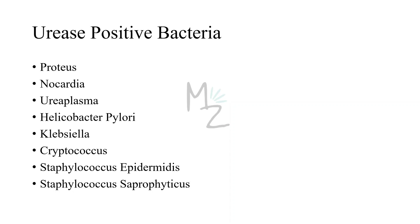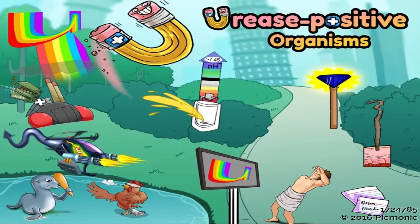Following are the urease positive bacteria — I do have videos on them if you're interested, be sure to check out the channel. First is Proteus, then Nocardia, then Ureaplasma, then Helicobacter pylori — the most famous urease positive bacteria — then Klebsiella, Cryptococcus, Staphylococcus epidermidis, and Staphylococcus saprophyticus.